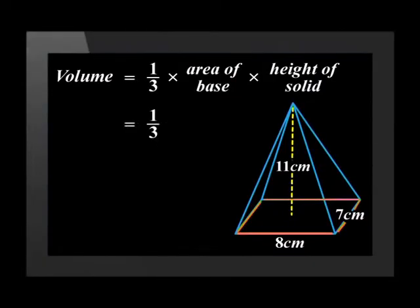This means that we have a third open brackets 8 times 7 close brackets times 11, which is equal to 205.33 cm³ rounded to two decimal places.